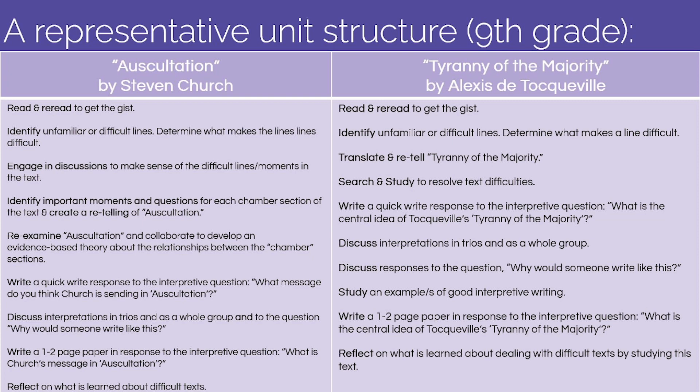Middle school units include a poem for students to work through, and in high school, students will usually have to work through one historical text in the unit — a text that presents the kind of archaic language and syntax that can stump any reader the first time around. These texts are usually processed with focused translation work, allowing students to parse the ideas one section at a time and assemble them together as a whole.